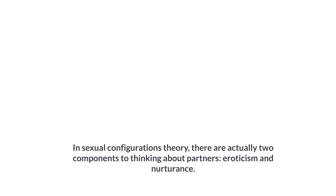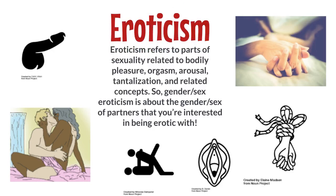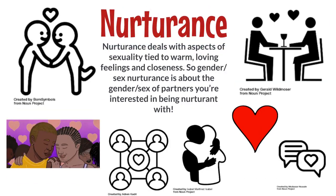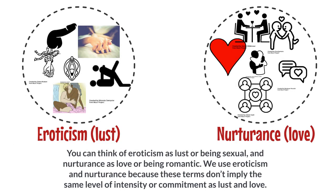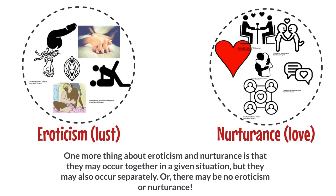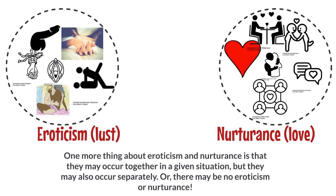In sexual configurations theory, there are actually two components to thinking about partners: eroticism and nurturance. Eroticism refers to parts of sexuality related to bodily pleasure, orgasm, arousal, tantalization, and related concepts. So gender sex eroticism is about the gender sex of partners that you're interested in being erotic with. Nurturance deals with aspects of sexuality tied to warm, loving feelings and closeness, so gender sex nurturance is about the gender sex of partners you're interested in being nurturant with. You can think of eroticism as lust or being sexual, and nurturance as love or being romantic. We use eroticism and nurturance because these terms don't imply the same level of intensity or commitment as lust and love. One more thing: eroticism and nurturance may occur together in a given situation, but they may also occur separately, or there may be no eroticism or nurturance.